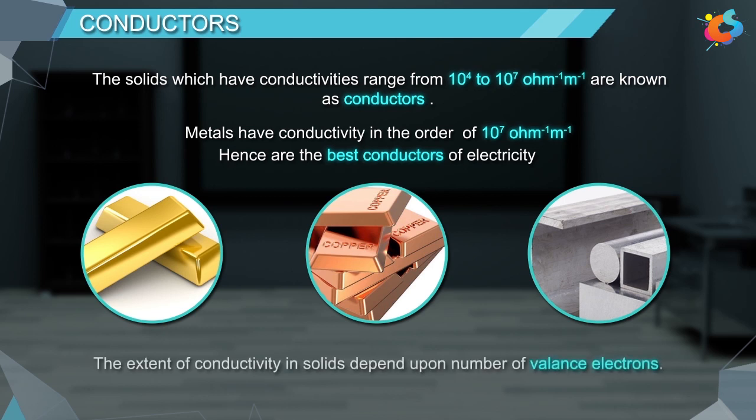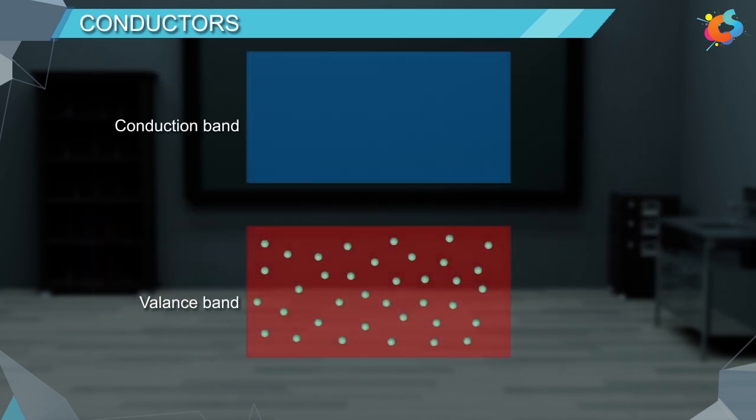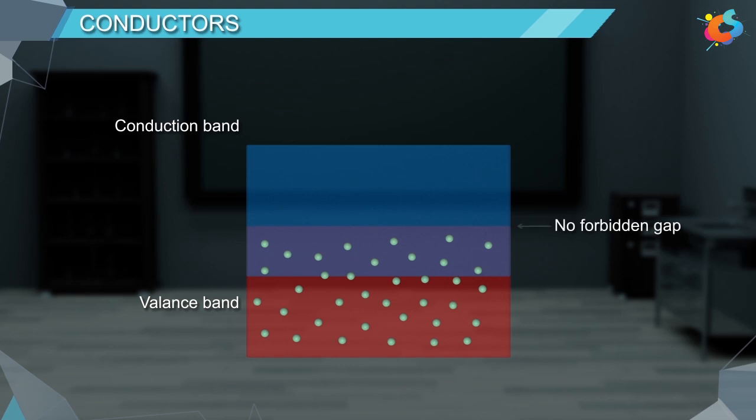The extent of conductivity in solids depends upon the number of valence electrons. In metals, the valence band is partially filled and usually overlaps with the empty conduction band such that there is no forbidden gap present. As a result, electrons from the valence band can easily move to the conduction band. This results in conductivity in metals.